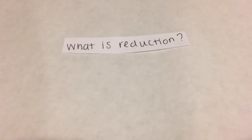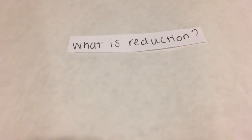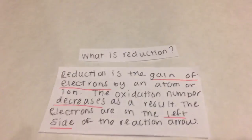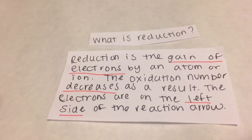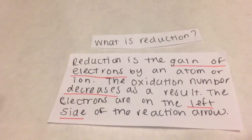Hey, it's time for a quiz. Let's see how much you remember about electrochemistry. Next question: What is reduction? Reduction is the gain of electrons by an atom or ion. The oxidation number decreases as a result of this process. The electrons are on the left side of the reaction arrow when the half reaction is written.